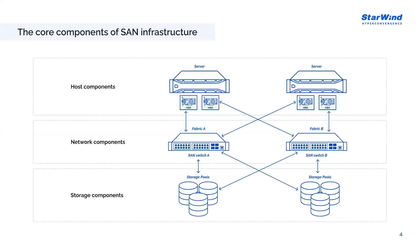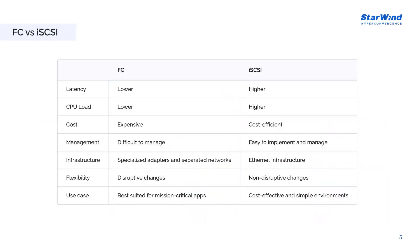SANs provide businesses with the flexibility to adapt their storage infrastructure to their specific requirements. The network infrastructure plays a primary role in SAN connectivity. Hardware components like switches, gateways, and routers work together to interconnect storage devices and servers seamlessly. A key technology powering this connectivity is Fiber Channel — it's like a superhighway that makes data flow smoothly between storage and servers. However, SANs can also operate using the iSCSI protocol as an alternative. Let's compare them on the next slide.